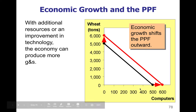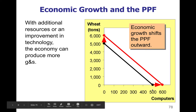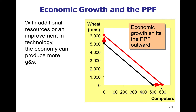It could also affect computers — something like more laborers could increase the number of computers. It could work for one or both of these. If we got an improvement in technology that helps the production of both wheat and computers, we can increase the production of both goods, thus shifting the PPF to the right. Anytime we have a shift to the right in any graph in economics, that's an increase — so here we're increasing production of both wheat and computers.